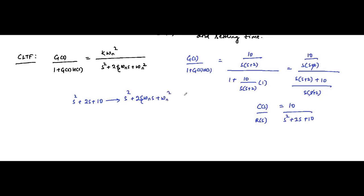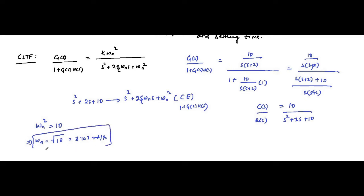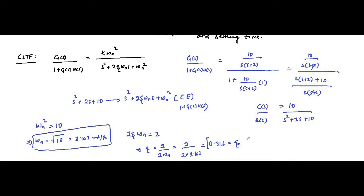Comparing with the standard form s² + 2ζωn·s + ωn², we get ωn² = 10, so ωn = √10 = 3.162 rad/s. Then 2ζωn = 2, which gives ζ = 2 / (2 × 3.162) = 1 / 3.162 ≈ 0.316. So we have the undamped natural frequency and damping ratio.